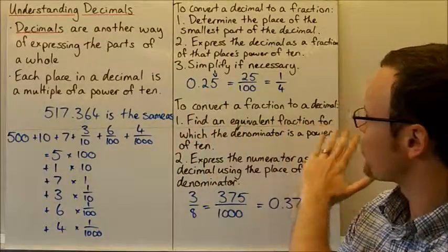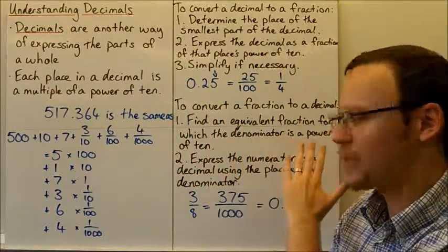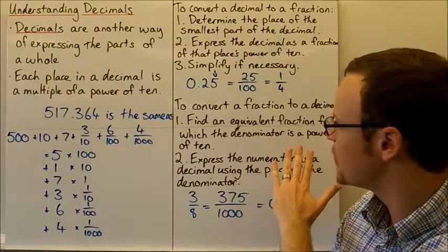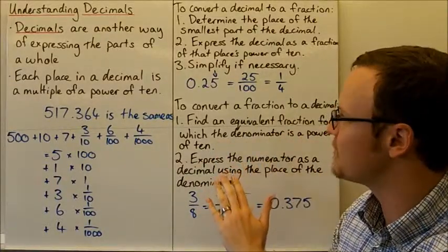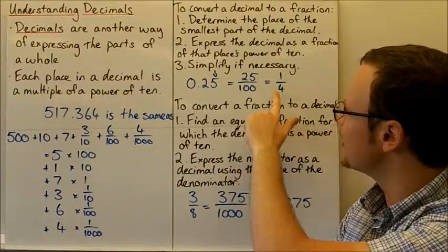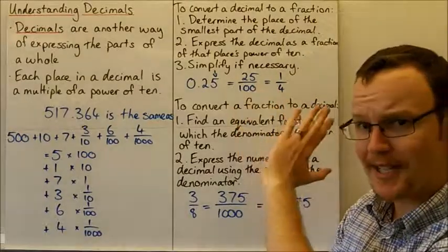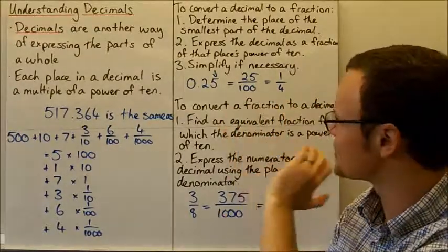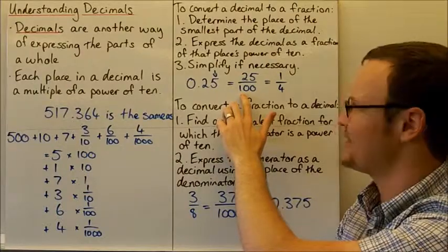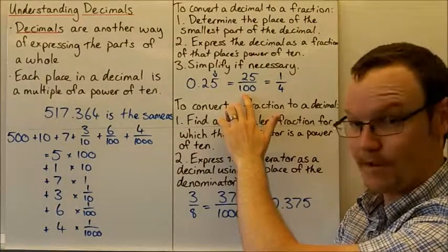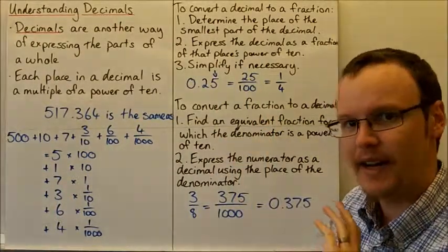Going back the other way, to convert a fraction to a decimal, we first need to find an equivalent fraction for which the denominator is a power of 10. For our fraction of one quarter, the denominator isn't a power of 10, but 25 over 100 has a denominator that is a power of 10 — it's 100.